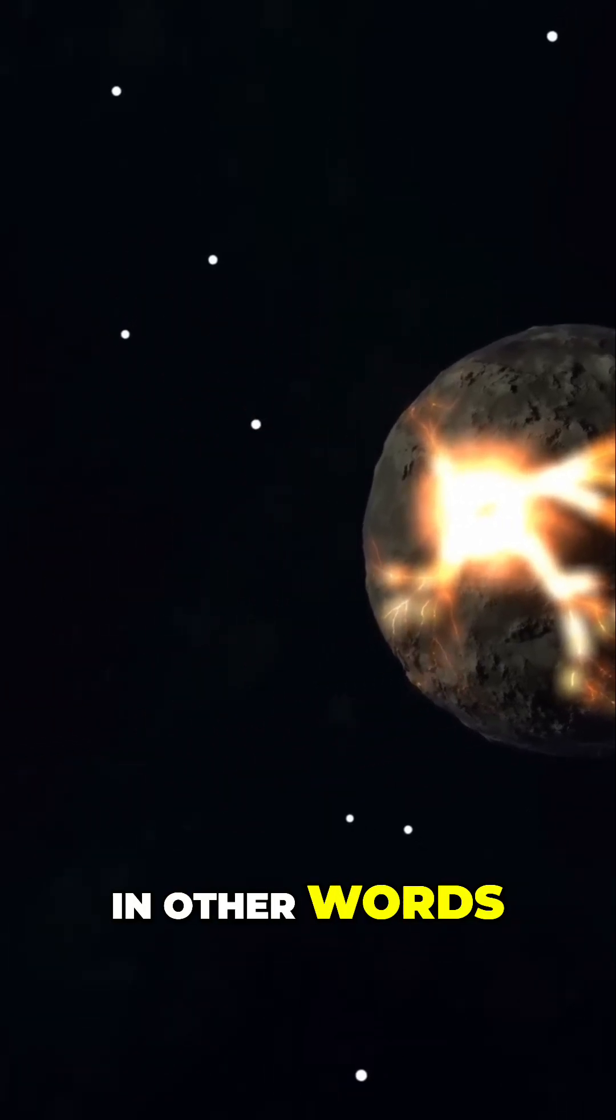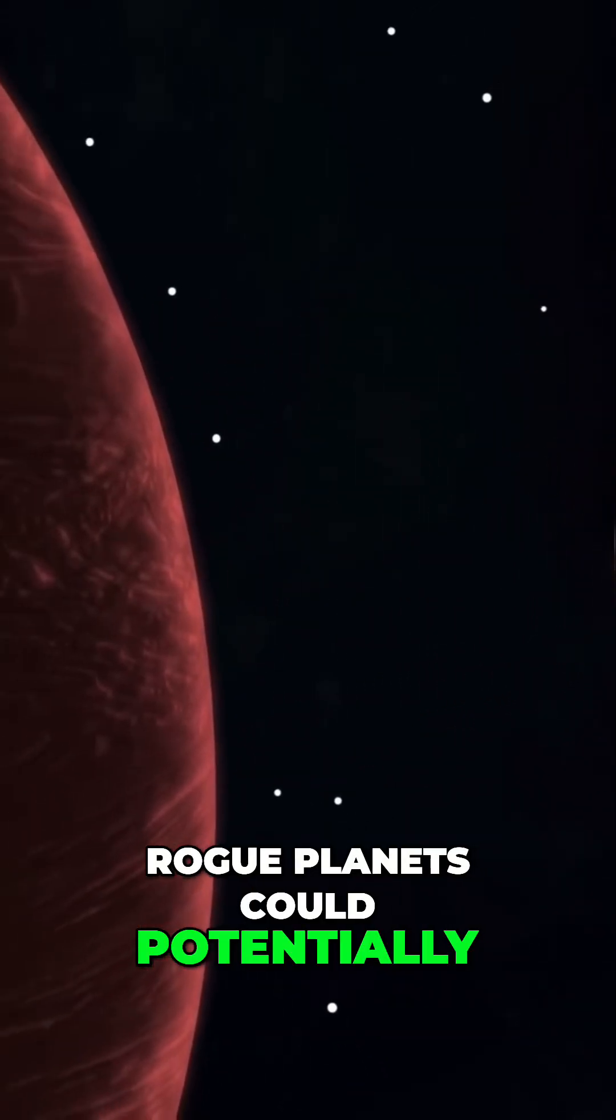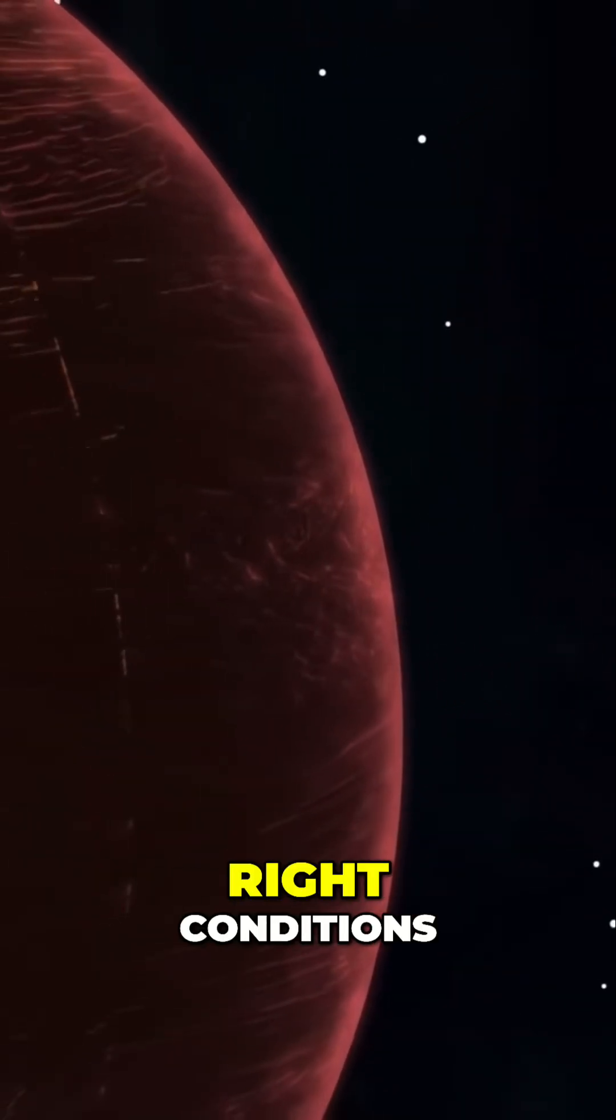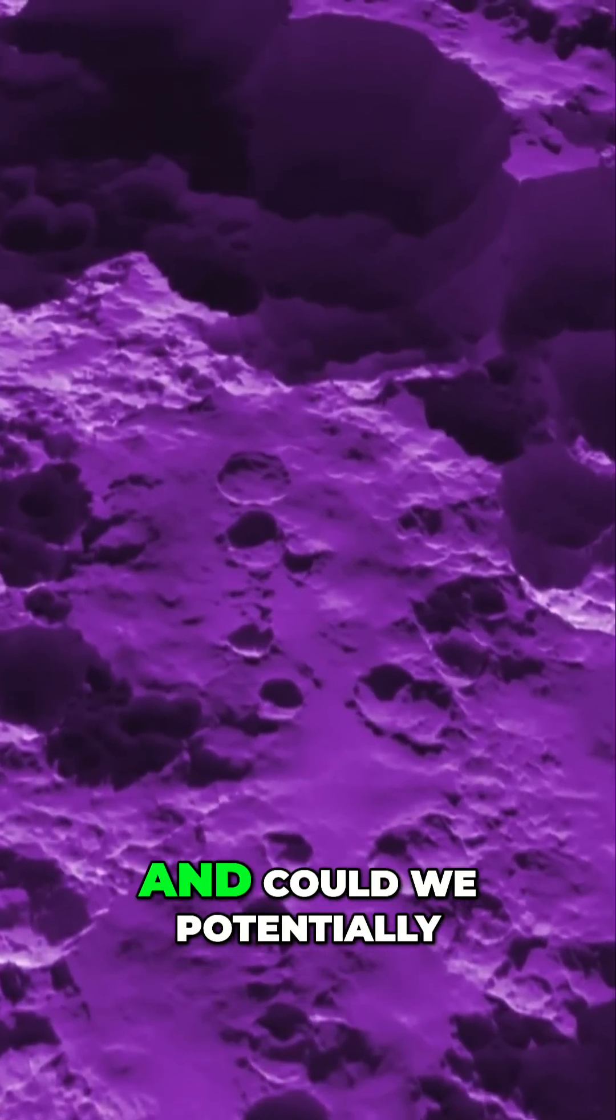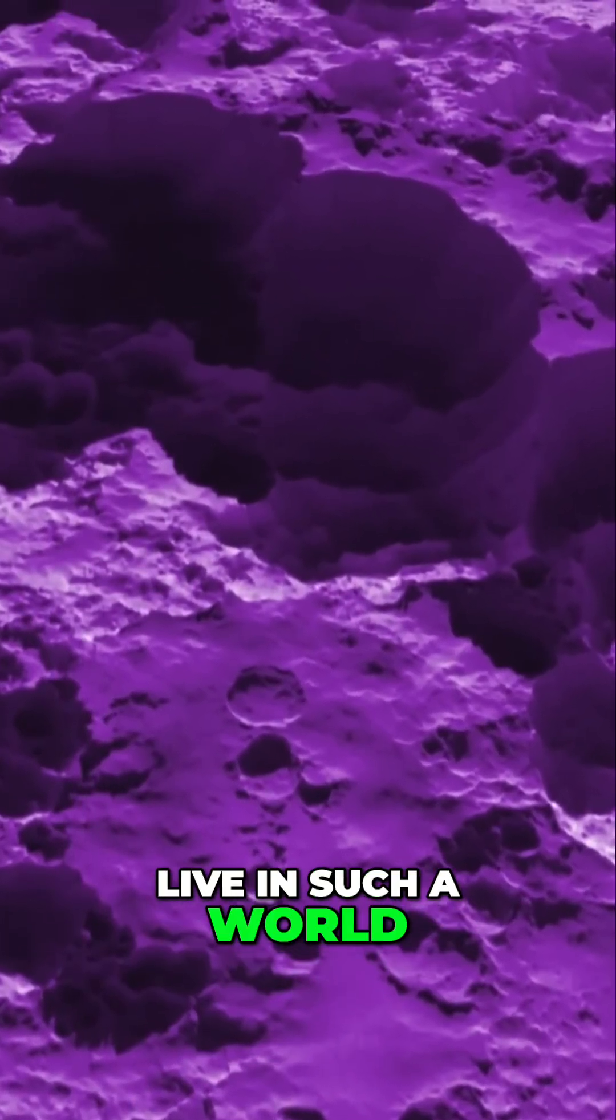In other words, rogue planets could potentially be habitable if they have the right conditions. So, what would life on such a planet look like? And could we potentially live in such a world?